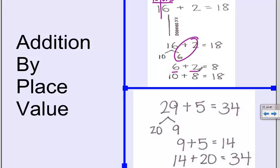So what I'm going to do is add my ones with my ones and my tens with my tens. 6 plus 2 is 8. I only have one ten. And my last step is to add my tens and ones together. 16 plus 2 is 18.